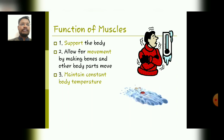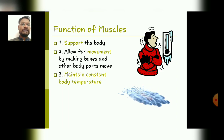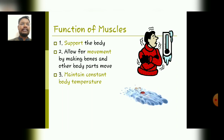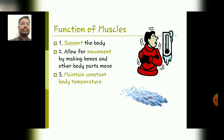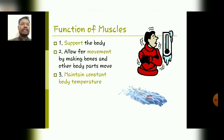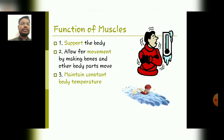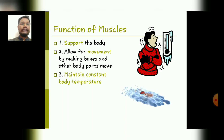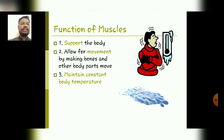Coming to the functions of muscles: the first function is supporting the body; the second function is allowing movements by making bones and other body parts movable; and the third function is maintaining constant body temperature, or we can say it helps in the regulation of body temperature, achieving homeostasis.